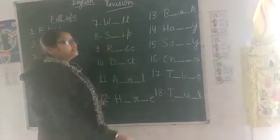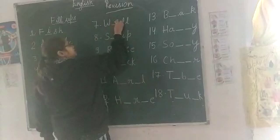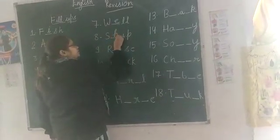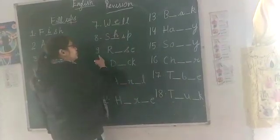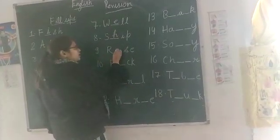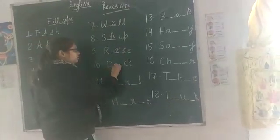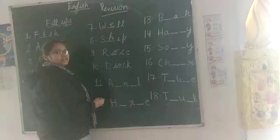Number seven is well. W-E-L-L. Well. Number eight is ship. S-H-I-P. Ship. Number nine is rose. R-O-S-E. Rose. Number ten is duck. D-U-C-K. Duck.